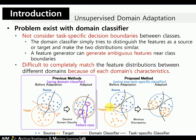However, this method has some problems. It does not consider task-specific decision boundaries between classes. The domain classifier simply tries to match source and target distributions, without considering the relationship between target samples and task-specific decision boundaries. Therefore, a feature generator can generate ambiguous features near class boundaries or incorrect features. Also, it is difficult to completely match feature distributions between different domains because each domain has different characteristics.